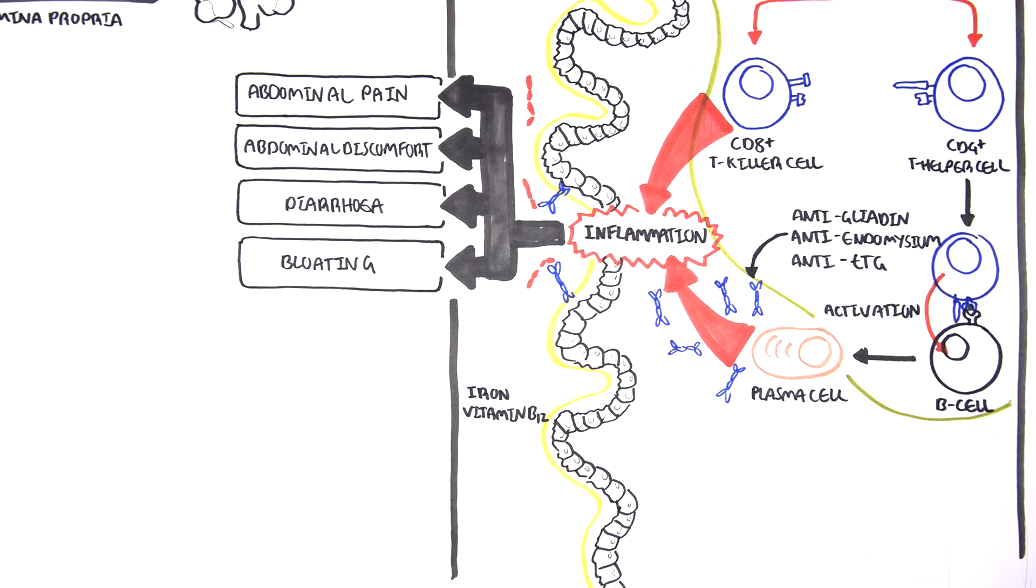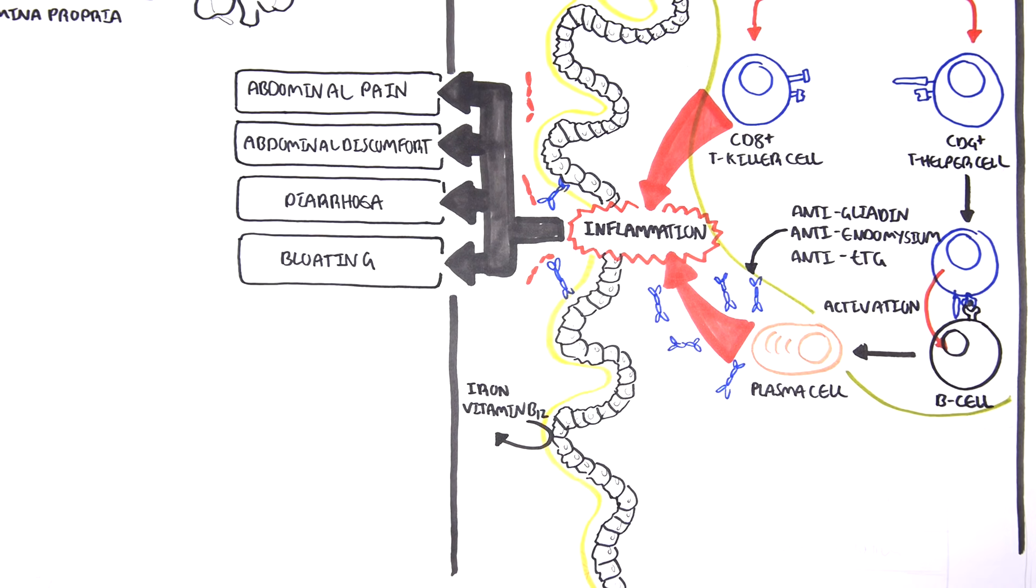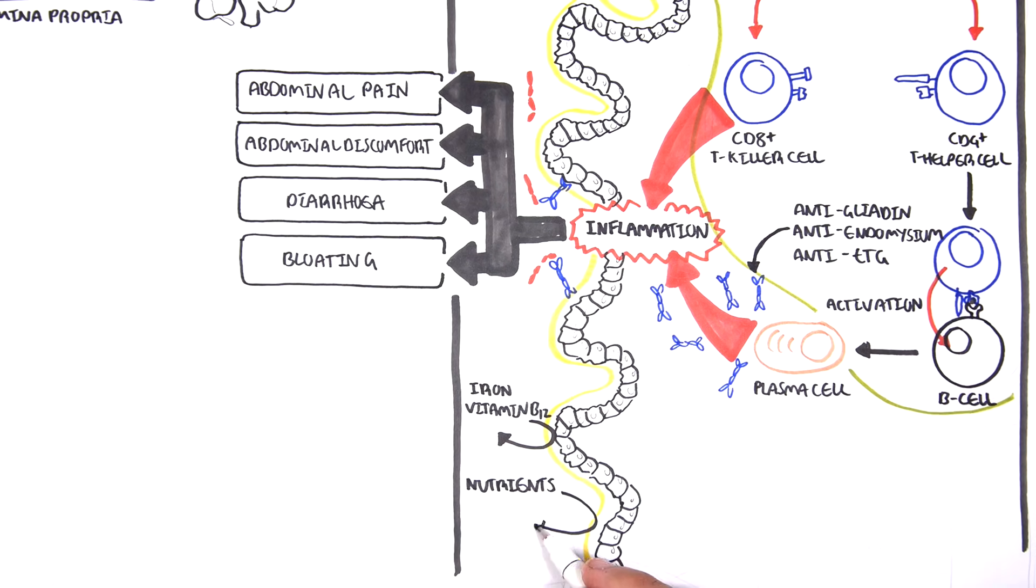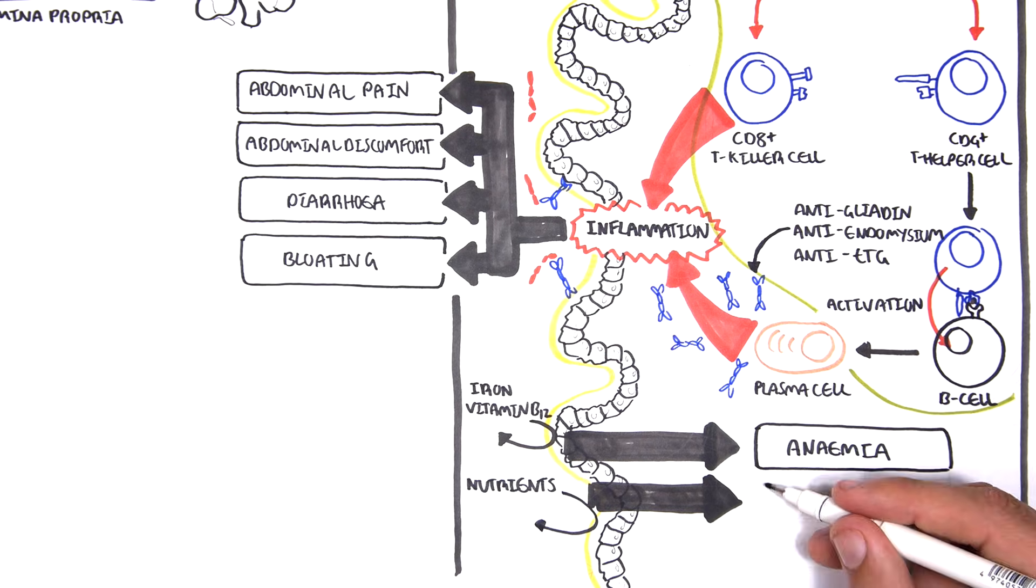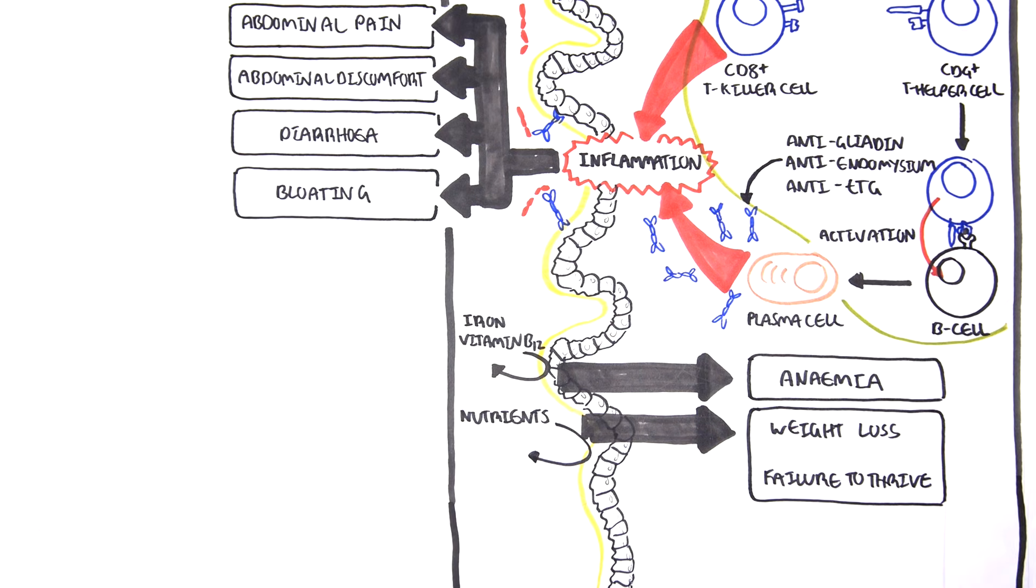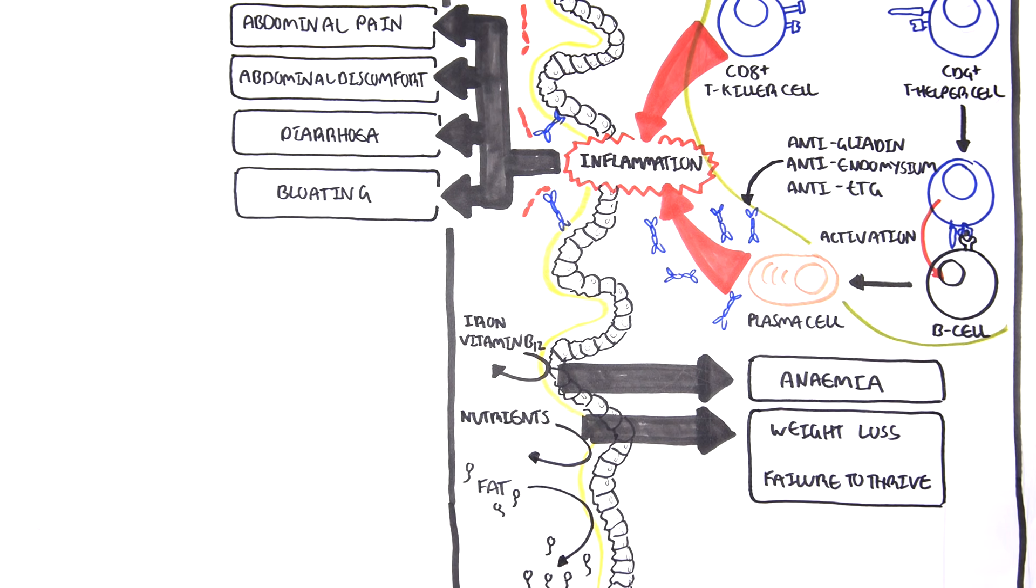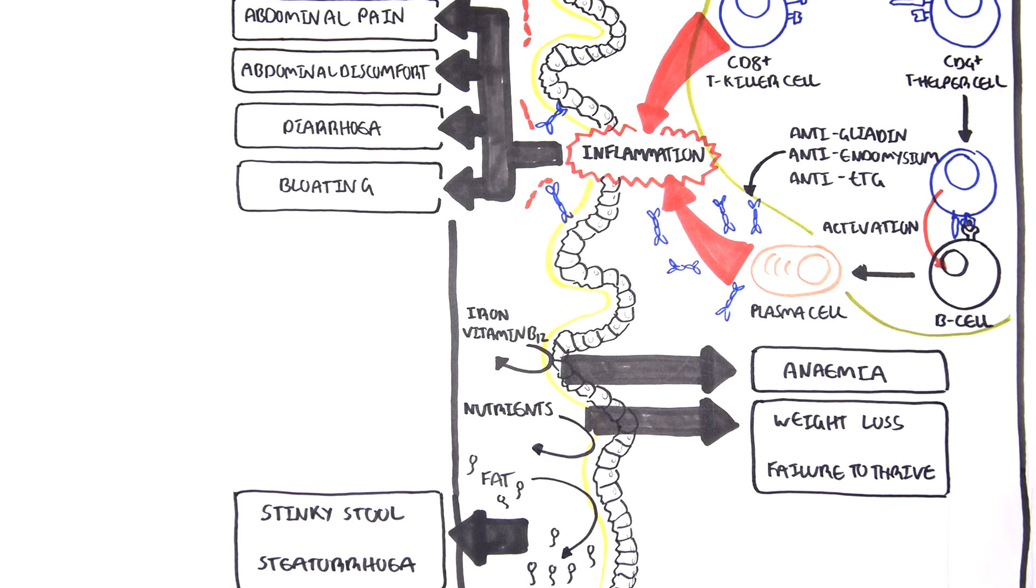So, when there is damage to the mucosa, things such as iron and vitamin B12 cannot be absorbed properly. Nutrients such as protein, carbohydrates cannot be absorbed properly. Iron and vitamin B12 that can't be absorbed leads to anemia. Other nutrients not being absorbed efficiently leads to weight loss, as well as failure to thrive in children. Lipids, fats that are not being absorbed, means the lipids will stay in the bowels and come out in poo. This will cause the stool to be stinky, and you get steatorrhea, which is basically fatty stool.